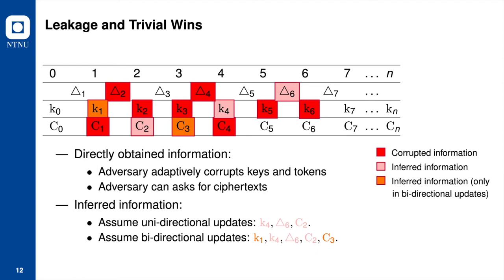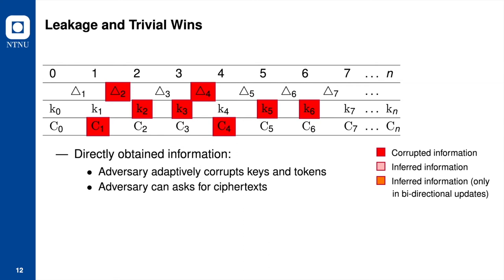Assuming the UE scheme has unidirectional updates, the adversary can infer K1 from K3 and Token 4, infer Token 6 from K5 and K6, and infer C2 from C1 and Token 2. If the UE scheme has bidirectional updates, the adversary can additionally infer K1 from K2 and Token 2, and infer C3 from C4 and Token 4.